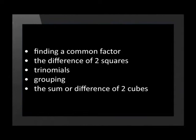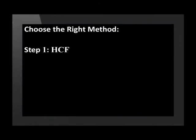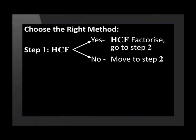Let's look at some steps that will help us choose the right method to use. The first step should always be to look for the highest common factor. If there is a highest common factor, factorize it and then move to step two. If there isn't a common factor, move on to step two.